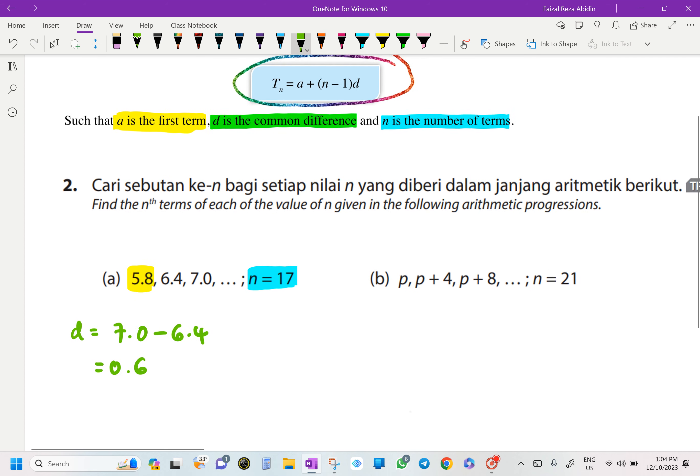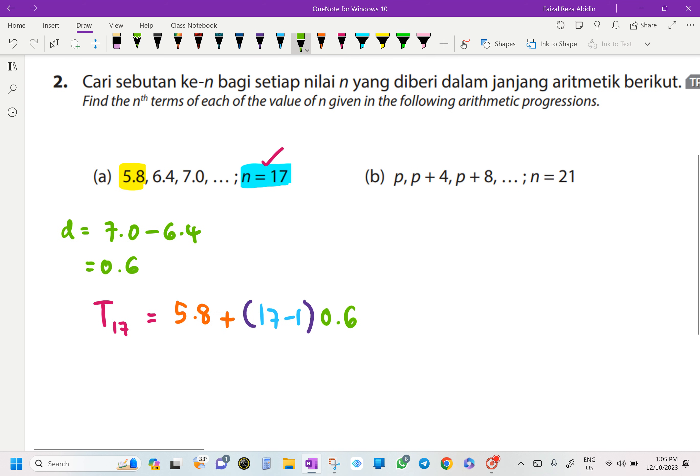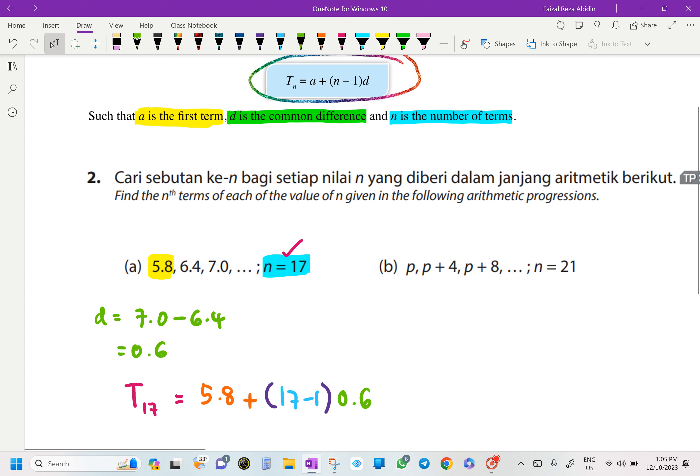Okay, now what we are going to do over here, we are going to find the N terms. So by using our formula, T17. Why 17? Because our N here is 17, am I right? Okay, equals to A here is 5.8 plus our N here just now is 17. So it's going to be in the bracket, 17 minus 1, close the bracket, and we are going to times with 0.6.